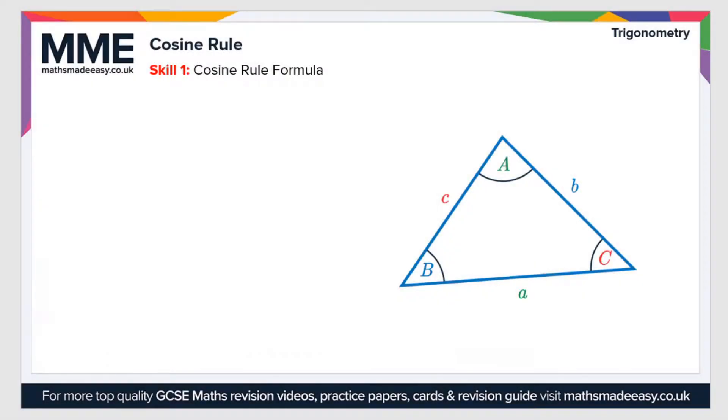Welcome to the Maths Made Easy tutorial on the cosine rule. When you first see the cosine function, you use it to find missing side lengths or missing angles in a right angle triangle.